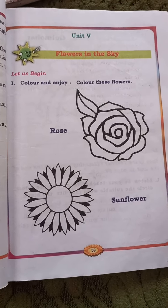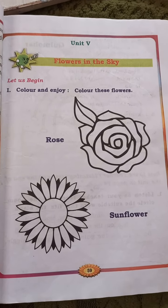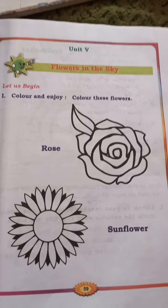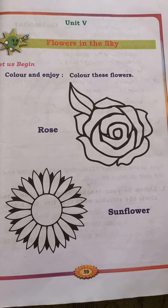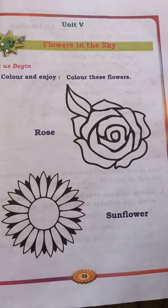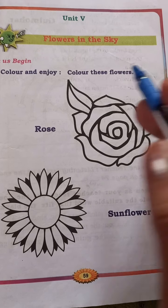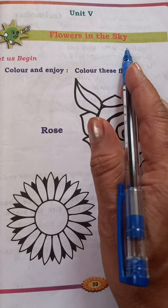Namaste children. Welcome back to English class. In today's class, let us start with Unit 5: Flowers in the Sky.